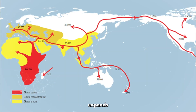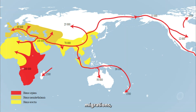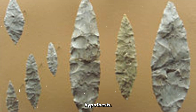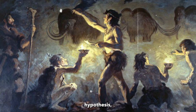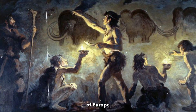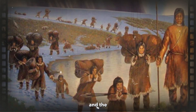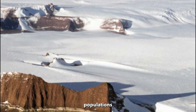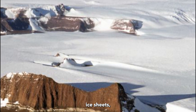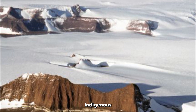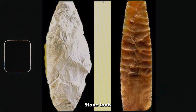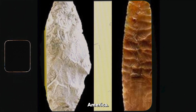While the pre-Clovis theory expands our understanding of early human migrations, there's one more theory that has stirred controversy and intrigue — the Solutrean hypothesis. The Solutrean hypothesis proposes a connection between the Solutrean culture of Europe, approximately 20,000 years ago, and the peopling of the Americas. This theory suggests that some early European populations crossed the North Atlantic ice sheets, contributing to the genetic diversity of indigenous populations in the Americas. Proponents argue that similarities between Solutrean and Clovis stone tools indicate cultural contact between Europe and America.